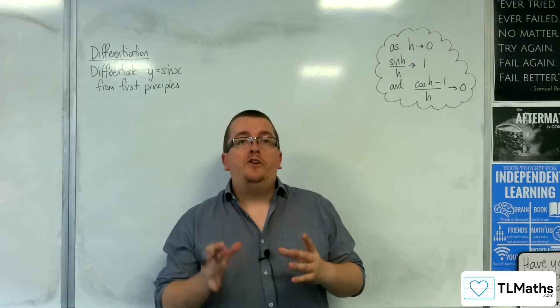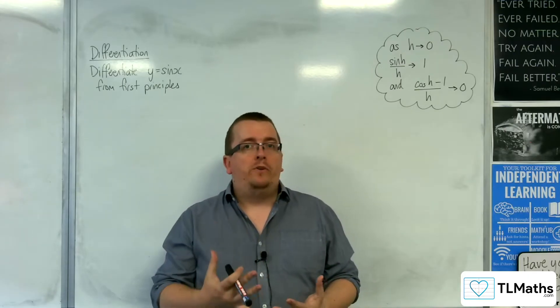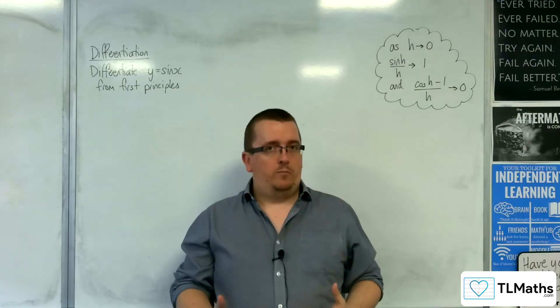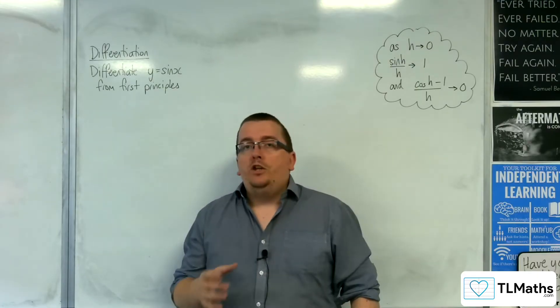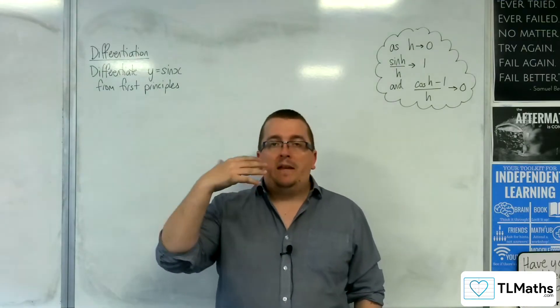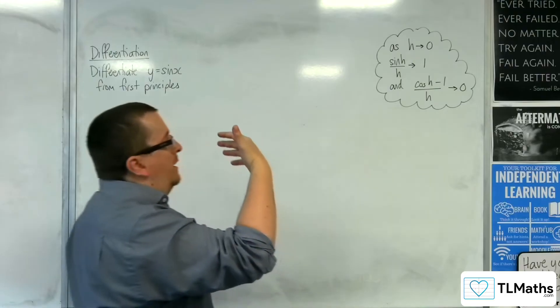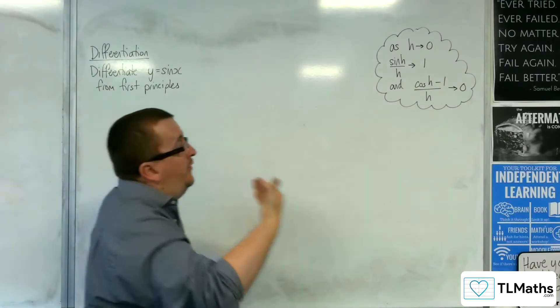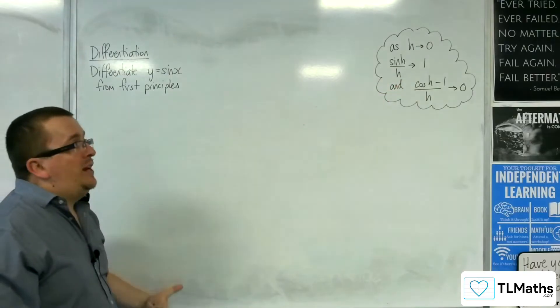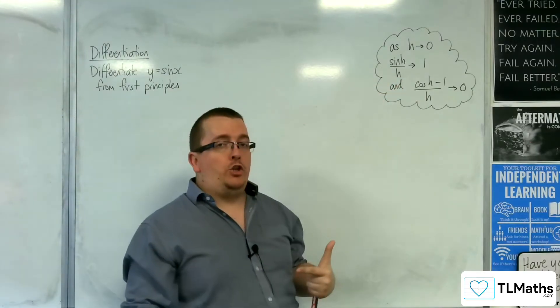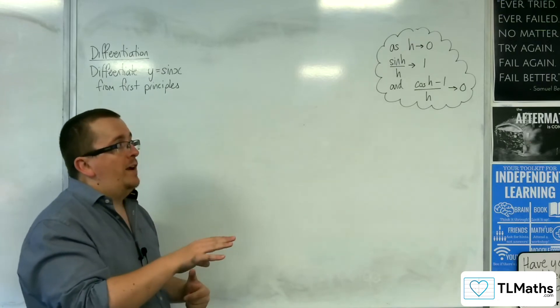In the previous two videos, I've shown you how to differentiate sine x and cosine x from first principles using the small angle approximations. That's probably my preferred route through. However, you will see in mark schemes and exam questions that they can say you can assume these two limits to be the case: as h tends to 0, sine of h over h tends to 1 and cosine of h take away 1 over h tends to 0.